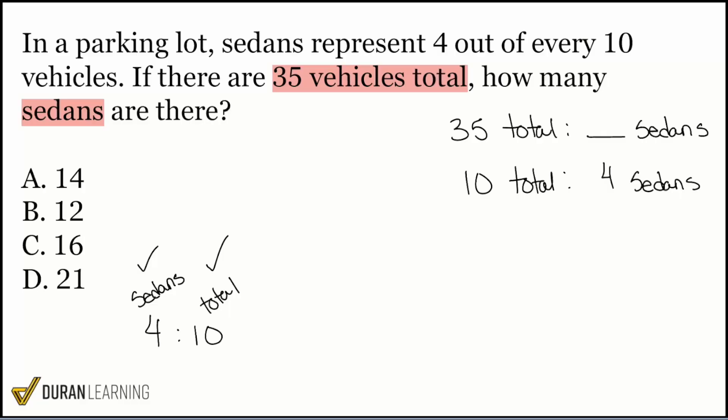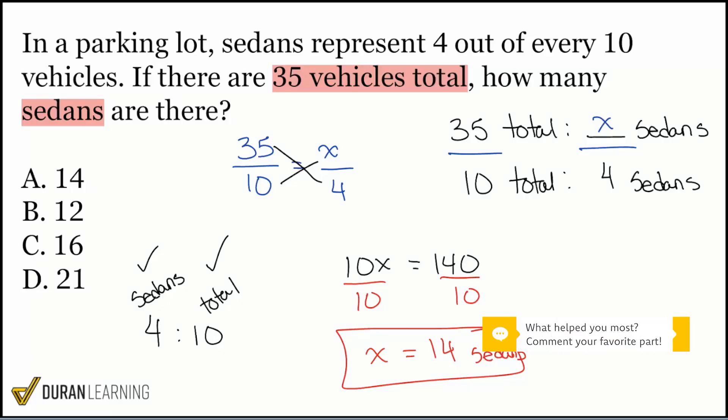So once we have this, now we know that we're set. We can compare 35 over 10 equals X over four. We can do this now. And once we're here to do this, we can now cross multiply to get 10X equals 35 times four, which is 70 times two, so 140. And then at the end, we'll divide both sides by 10, giving us X equals 14. That would make 14 sedans if the total number of vehicles is 35. The correct answer here is answer choice A.